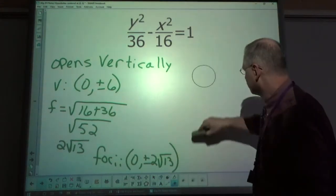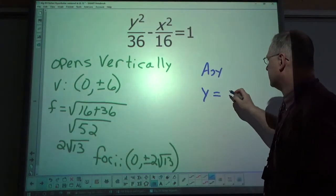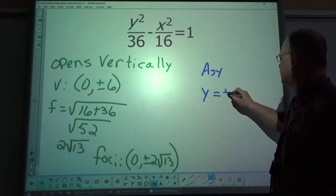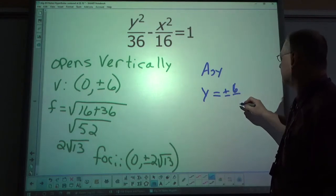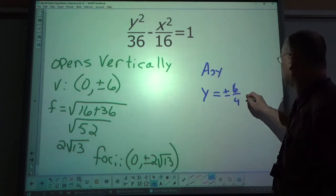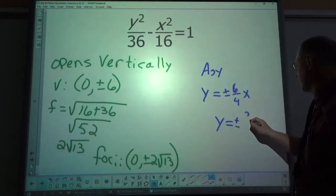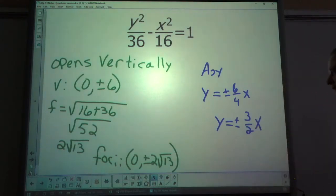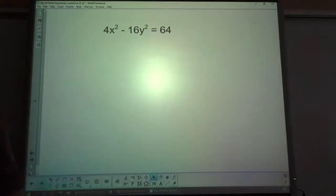And the equations of the asymptotes, y equals plus minus, let's see, b, 6 over a, 4 x. There's your equation of the asymptotes. All right.